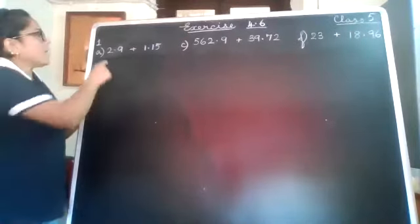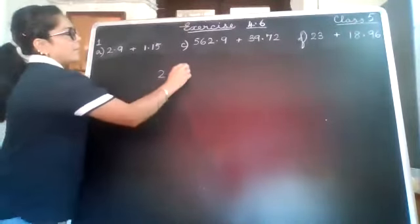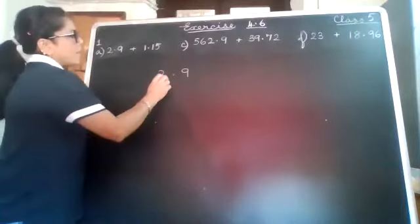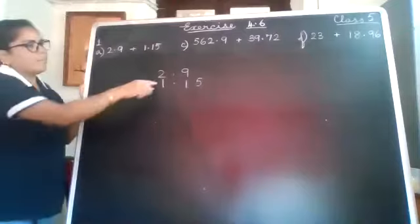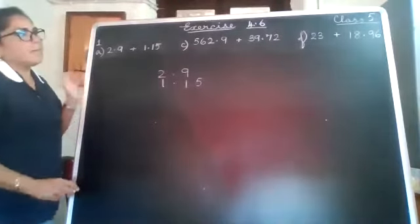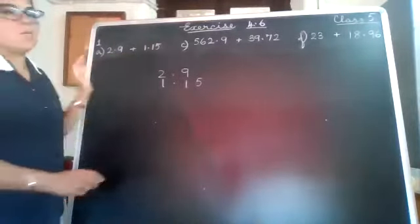Okay, so you can't write this 2.9 and then you can't write... now here coincidentally the point will come one below the other. But if I take this example, what will happen?